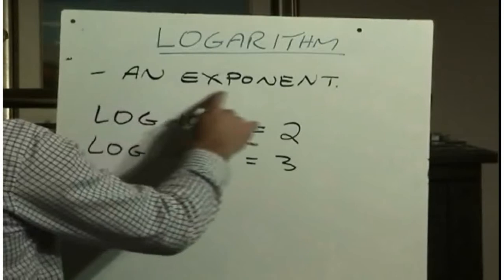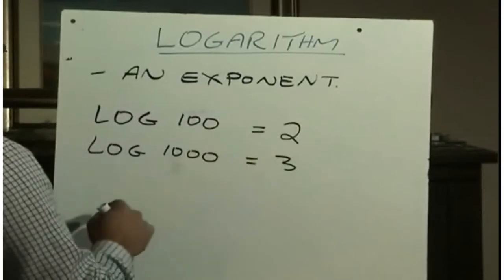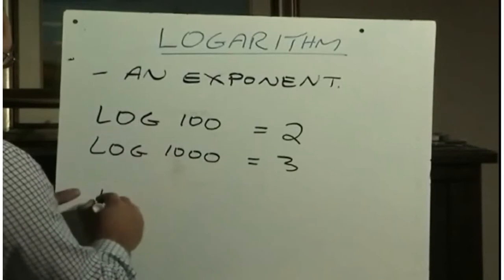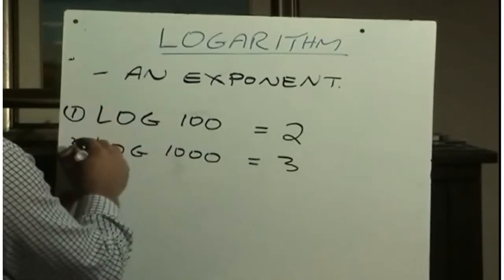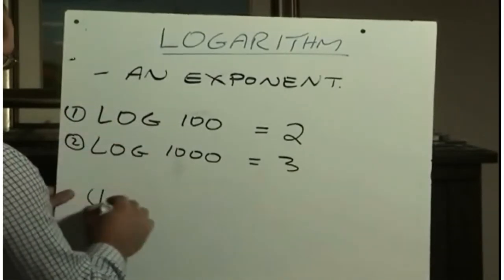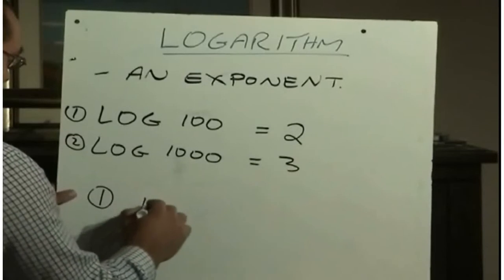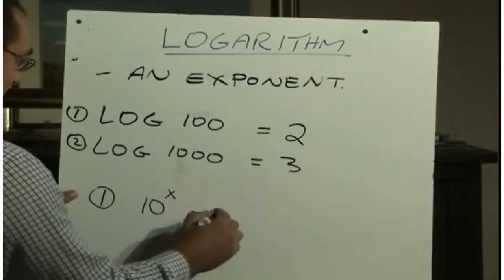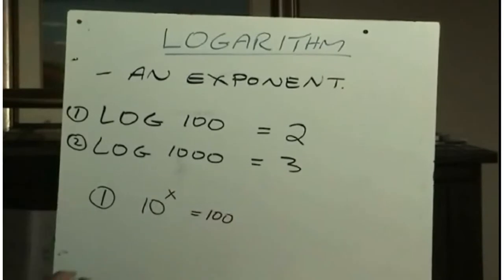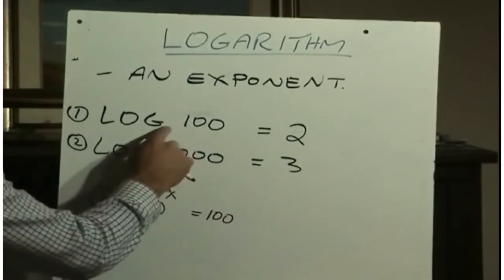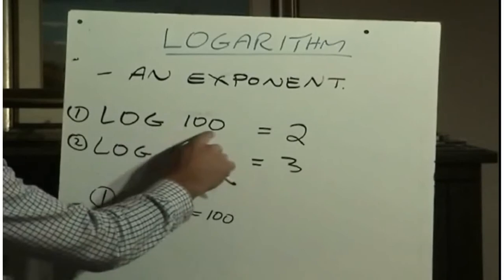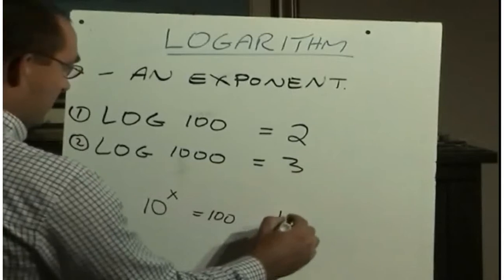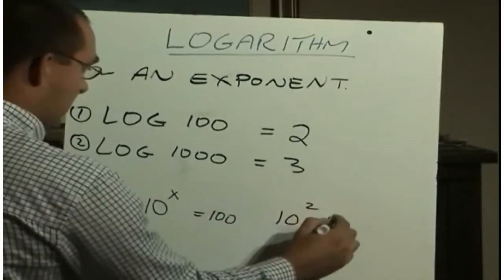Well, if we think back to what a logarithm is, that it's really just an exponent, what this question is asking is, we'll call this question 1, what it's saying is what would be the exponent on 10 that would equal 100? Of course, that's why the answer is 2, because 10 squared equals 100.